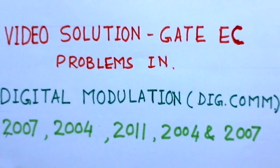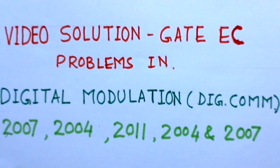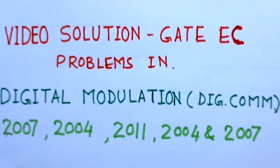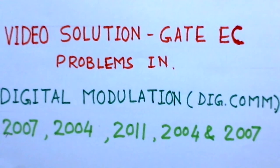The first problem is of GATE 2007. It is a common data type problem. Here, two Fourier constellations are given and one has to find the energy of each constellation and also find the probability of error.